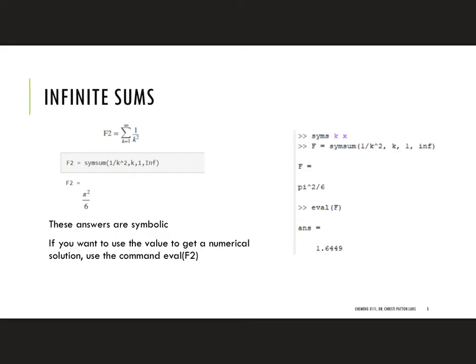Now the problem is this is symbolic so if you want to get a value for that you need to use the eval command. So EVAL parenthesis F evaluates Pi squared over 6 to give you 1.6449.